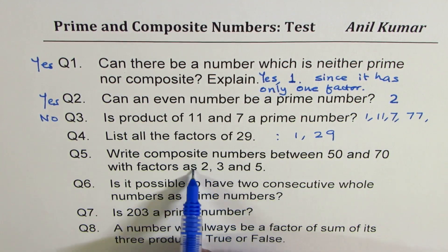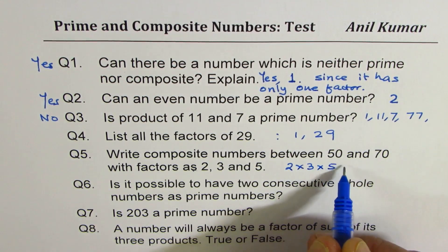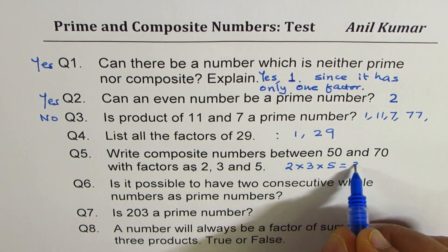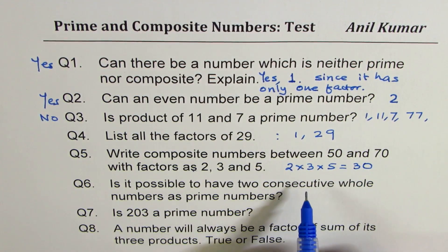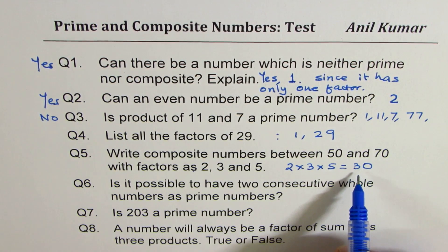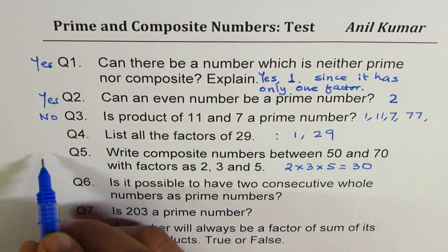Question 5: Write composite numbers between 50 and 70 with factors 2, 3, and 5. So if these three are factors, then the number could be 2 times 3 times 5, which is how much? 2 times 3 is 6, 6 times 5 is 30. Now if I'm looking for a number between 50 and 70, it could be 60. So the number will be 60.